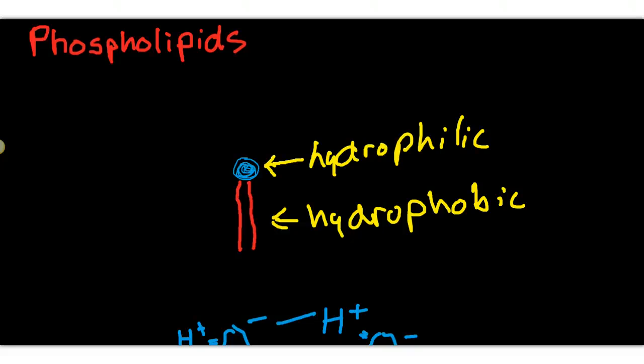Okay, another important molecule that is involved in the makeup of cells are phospholipids. Now, phospholipids are interesting molecules because they have a hydrophilic end and a hydrophobic end.